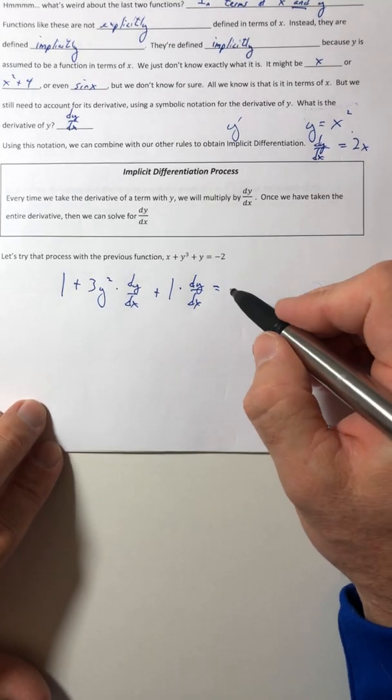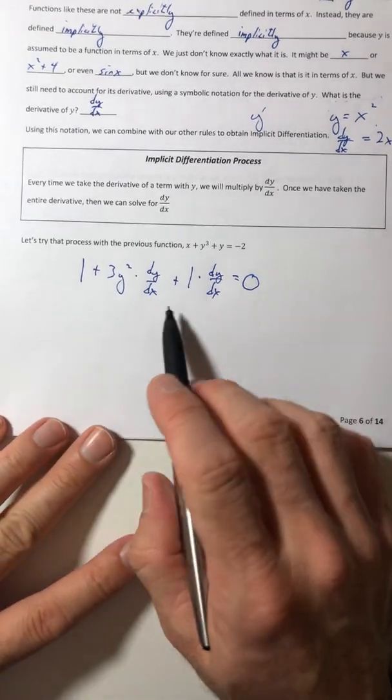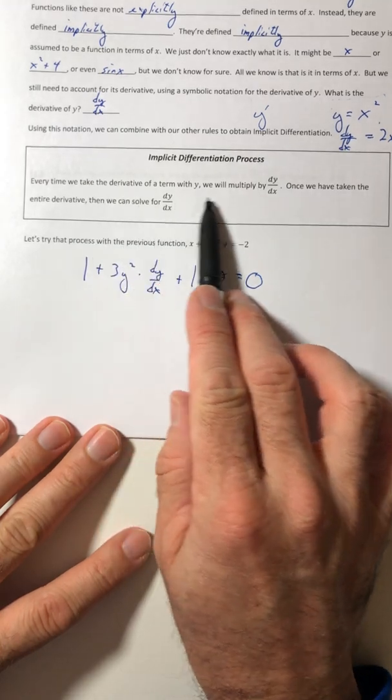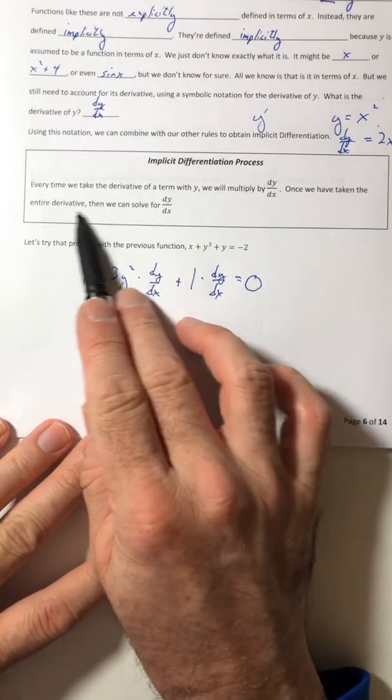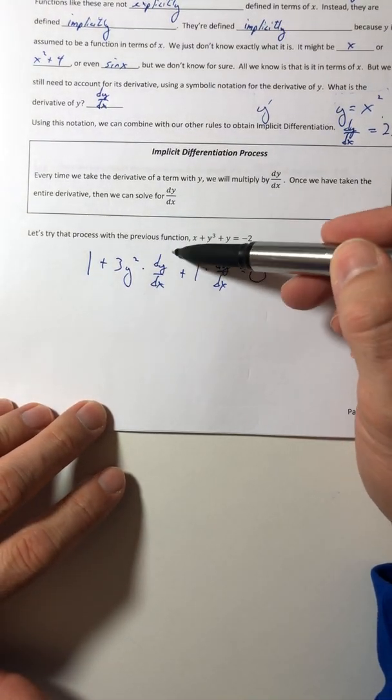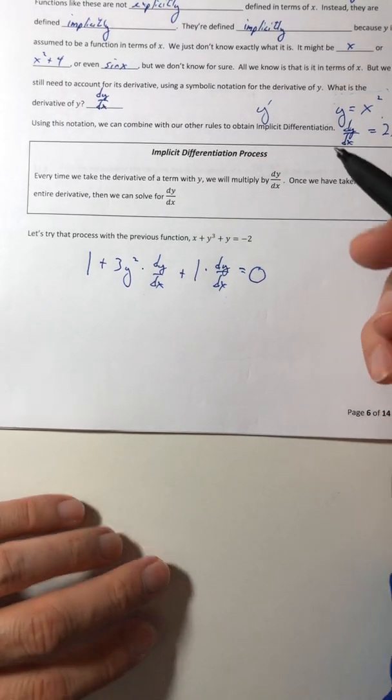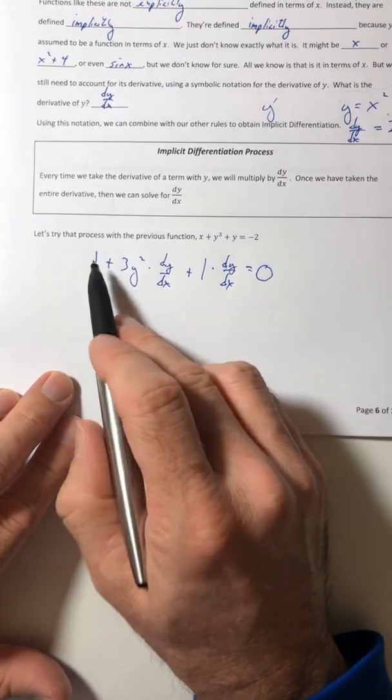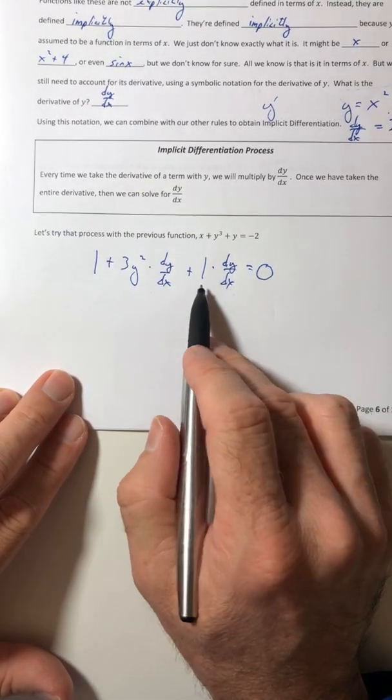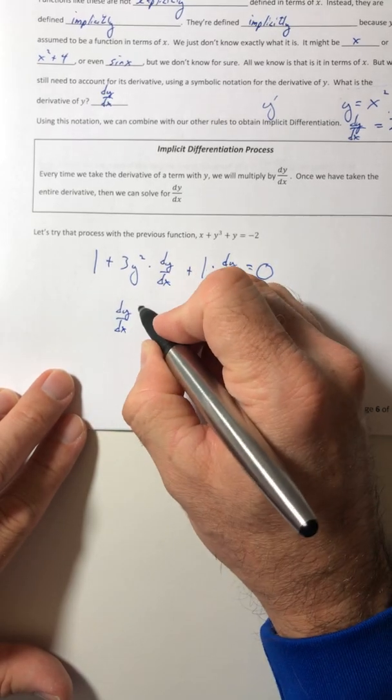And then the derivative of negative 2, that's just a big old constant. Okay, so there's the process to start. Well, now that you've taken the entire derivative, now you can solve for that dy dx. And it's okay if you have more than one, just treat it like a variable and solve for it. So we're going to swing the one over to the right. And at the same time, let's factor out a dy dx.